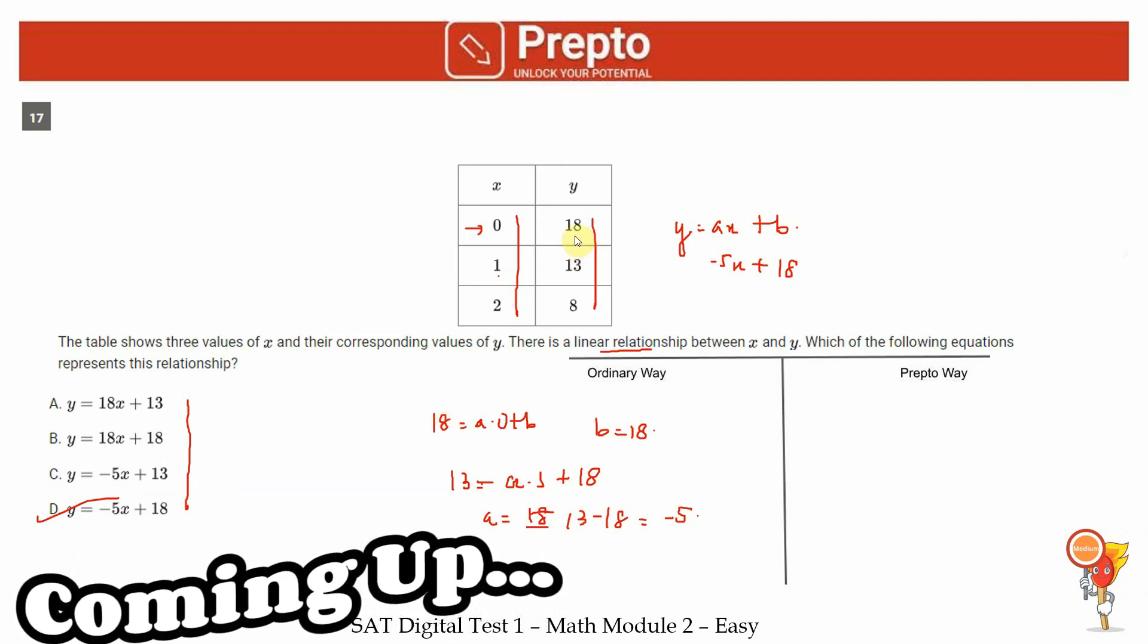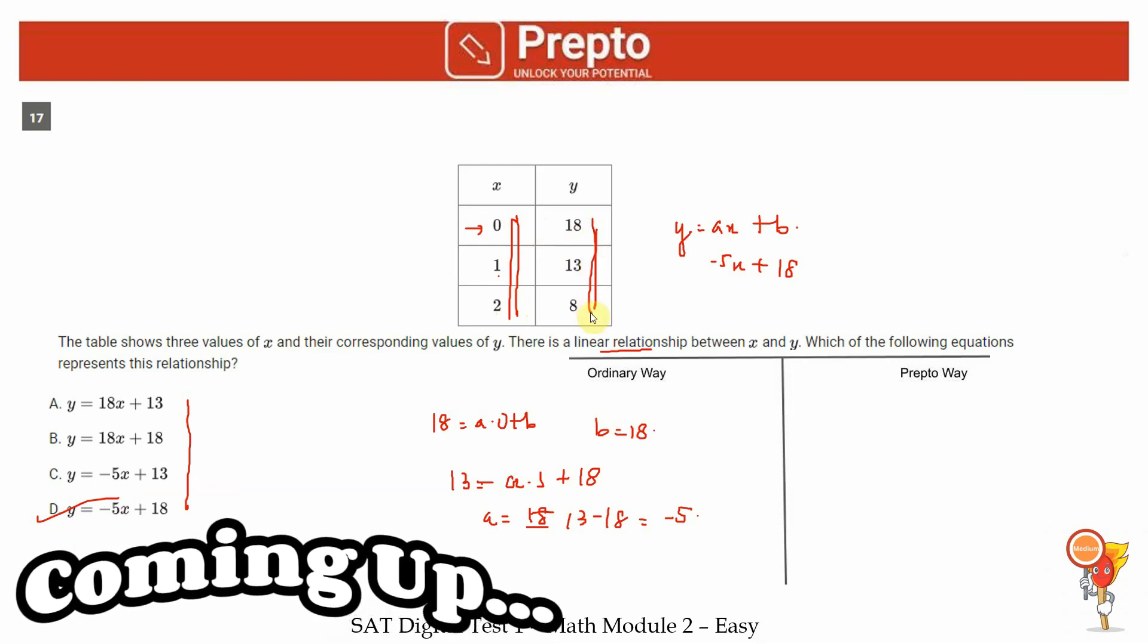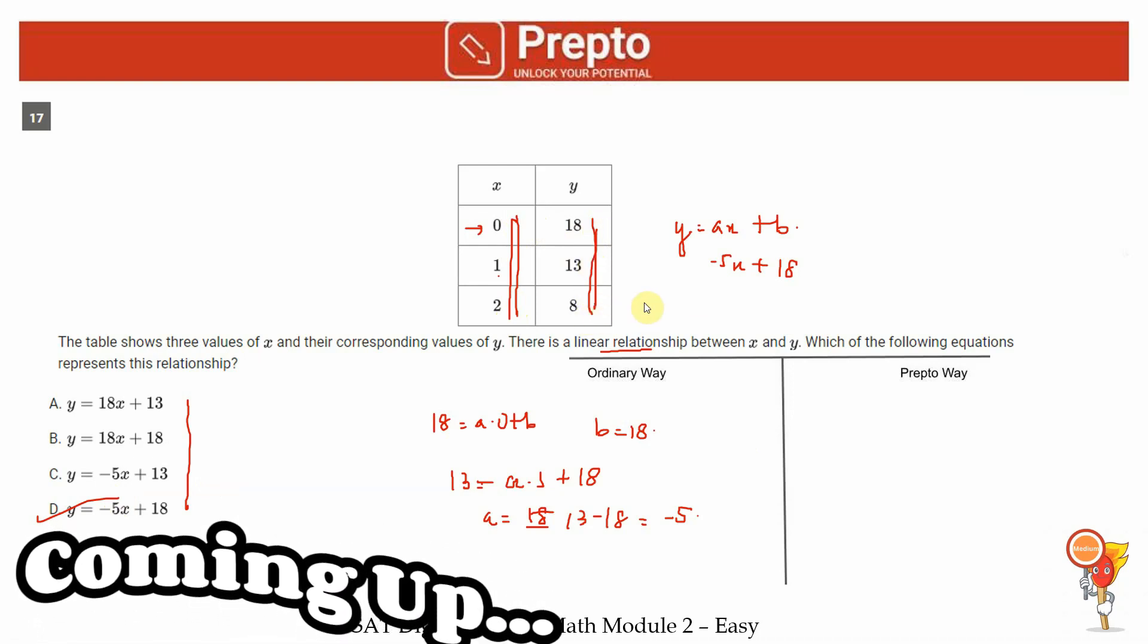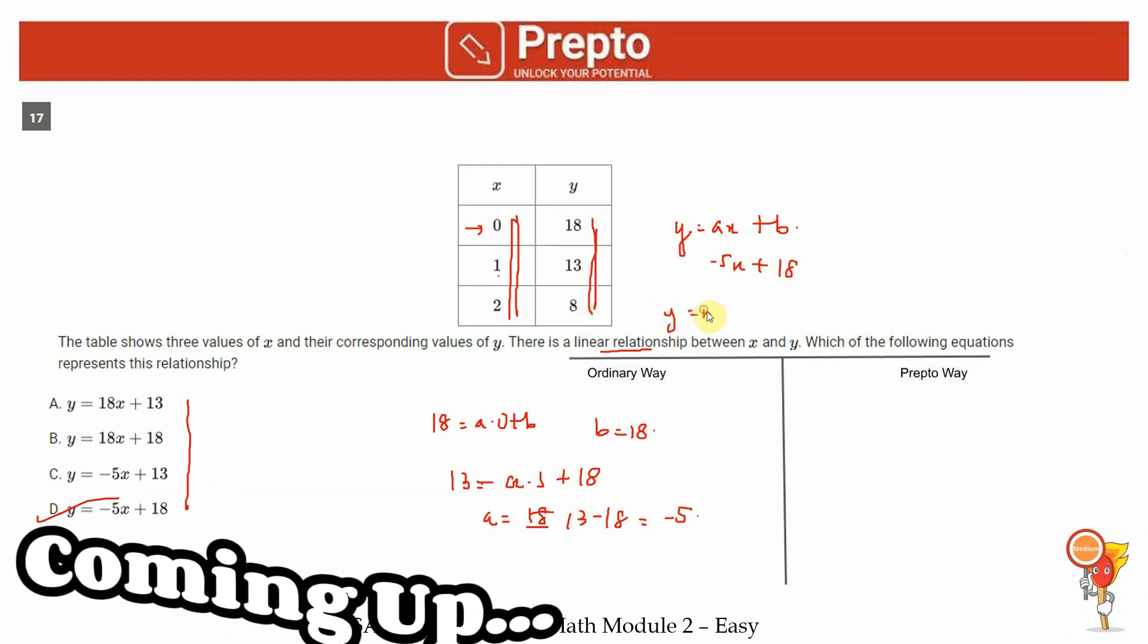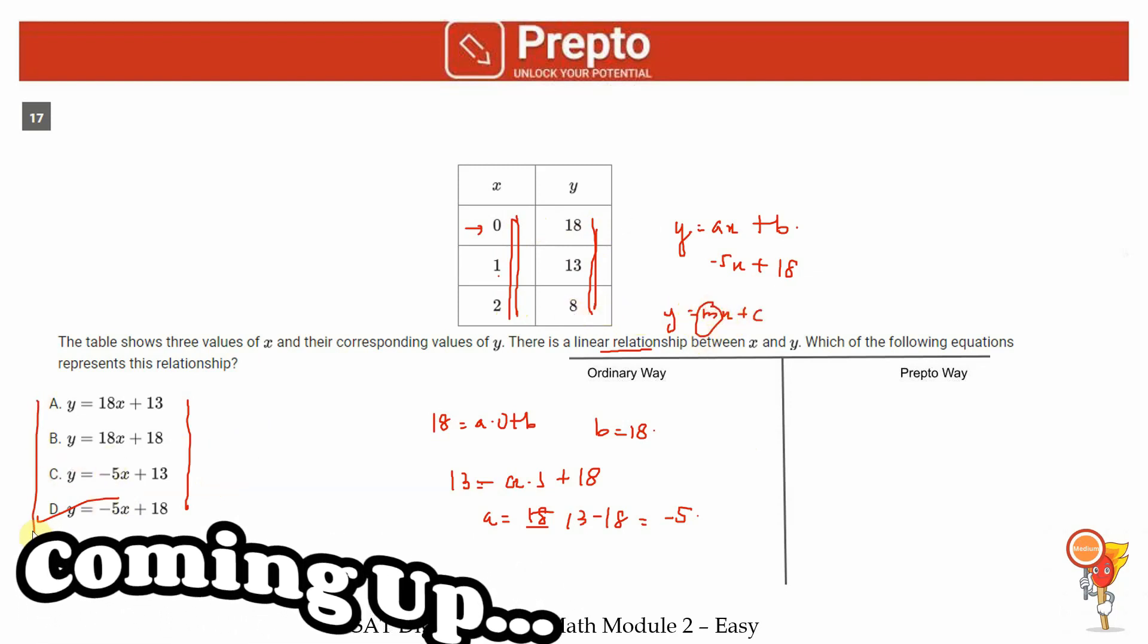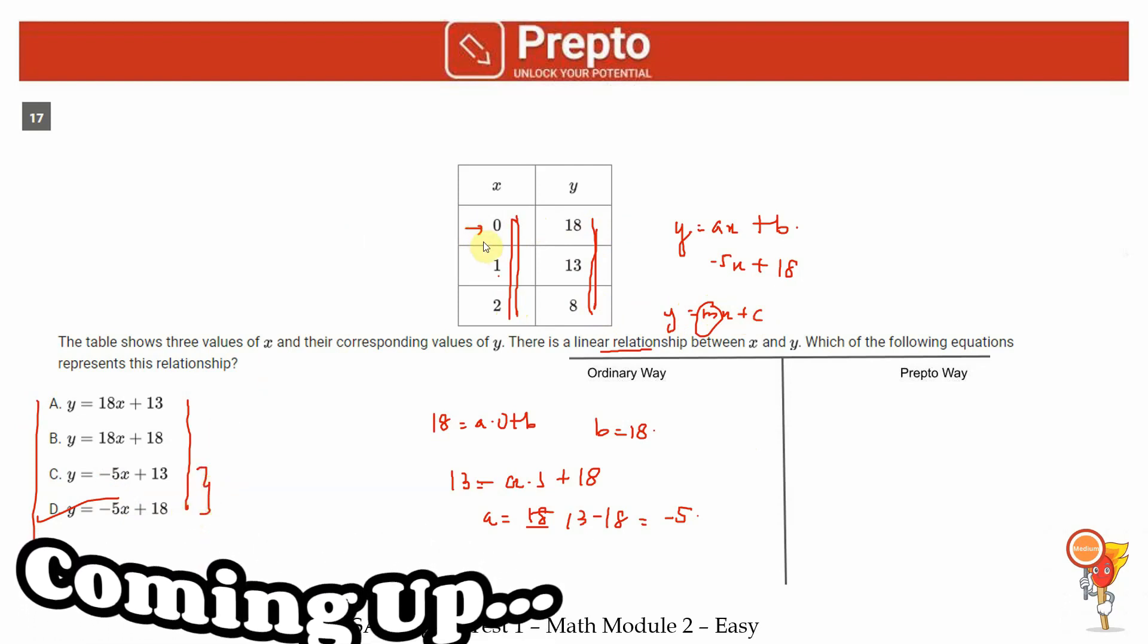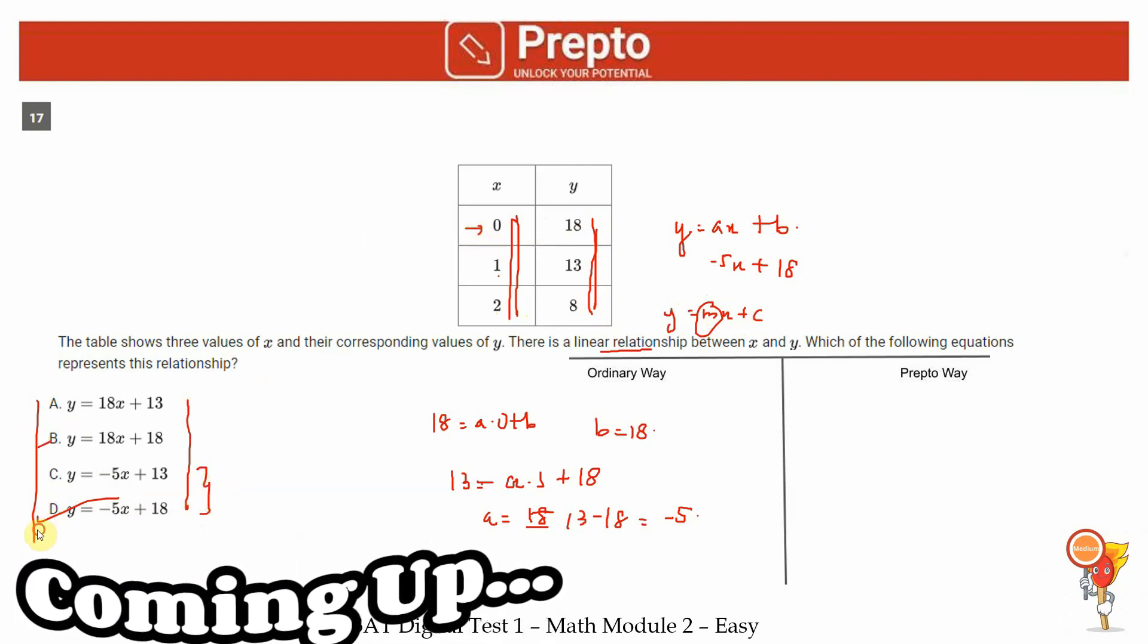In the Prepto way guys, the first thing that you can notice is that as x increases, y is decreasing. So this is a negative slope function. When we look at y equals mx plus c, this is negative because as x increases, y decreases. So out of these four options, we are only looking at c or d. And when x is 0, y is equal to 18. So we are looking at option d.